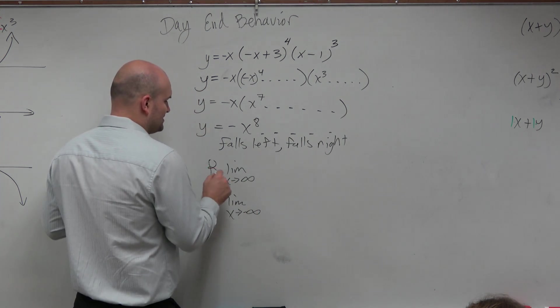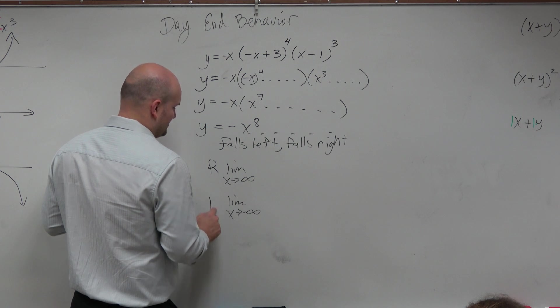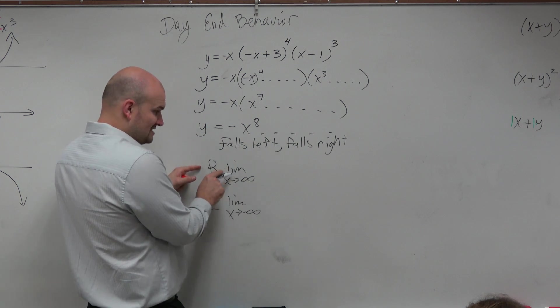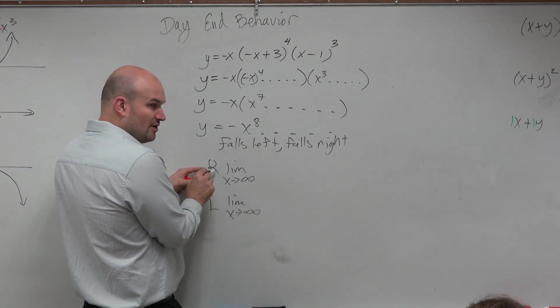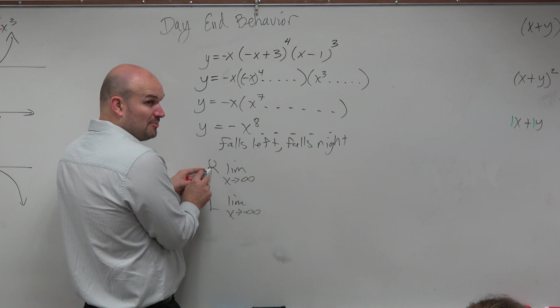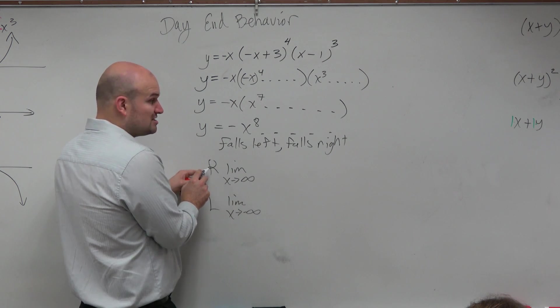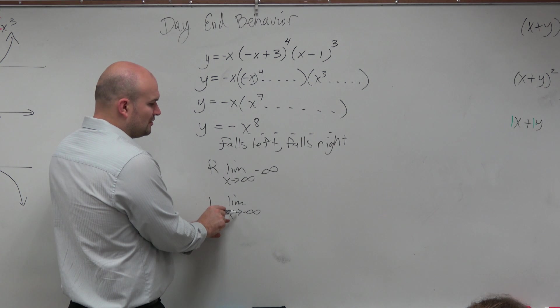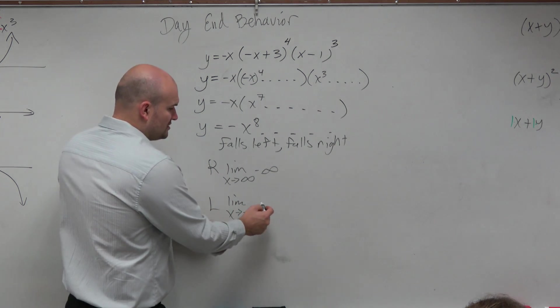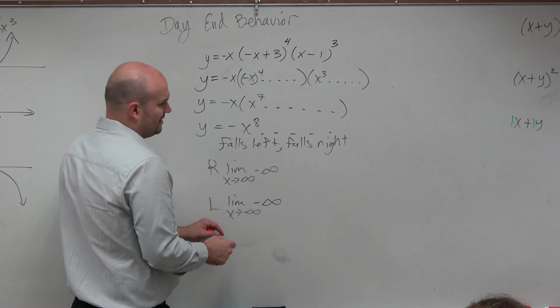So basically what this is saying is, as the graph goes to the right, as the limit of the function as x approaches infinity, basically saying, as we're going to the right, where's the function going? Up or down? Down. So therefore, it's approaching negative infinity. As we go to the left, the graph is also falling. So it's approaching negative infinity.